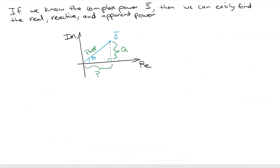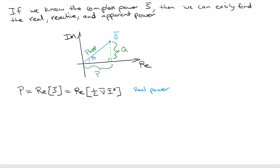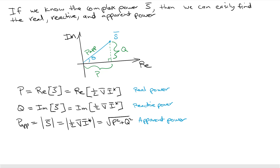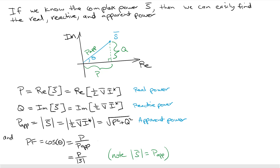Knowing the complex power phasor lets us easily find real, reactive, and apparent powers. The real power is the real part of the phasor, the reactive power is the imaginary component, and the apparent power is the magnitude — the square root of P squared plus Q squared. The power factor, which is cosine of the power angle, equals real power divided by apparent power, which is also the magnitude of the complex power phasor.